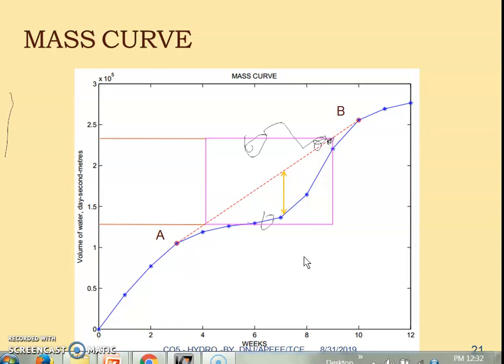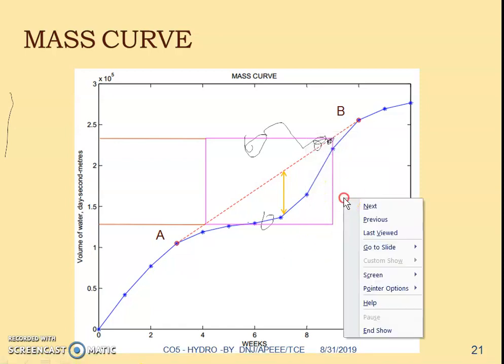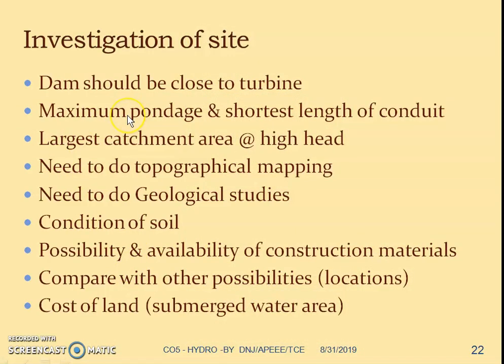Now we will discuss site selection for hydroelectric power plants. With respect to site investigation, three prime things to identify are: the dam should be very close to the turbine; you need a maximum quantity of water at a higher altitude; and you need to find a place for the turbine such that the shortest length of conduit is arranged. The conduit is the channel that conducts water from the reservoir to the turbine, essentially a pipeline arrangement between the reservoir and the turbine.